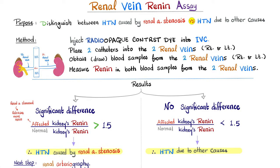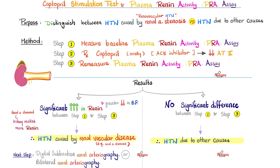We've proven the affected kidney is so compromised that it's releasing excessive renin. The next step is renal arteriography to assess how severe the narrowing is, which may require surgical intervention. However, if there is no significant difference between the right and left kidney renin levels, then what was seen on ultrasound or heard with the stethoscope is not the cause of the hypertension — go looking for other causes.